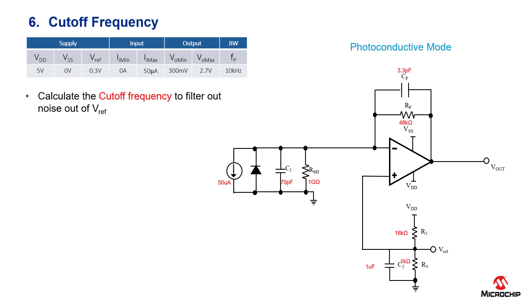For step six, we need to calculate the cutoff frequency due to C2. To do this, we plug in the values of the resistors R2 and R3 and select C2 to be one microfarad. We solve for the equation, and we calculate the cutoff frequency to be 169 hertz. This will help filter out noise from the reference voltage.